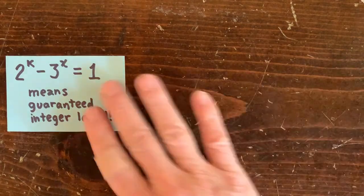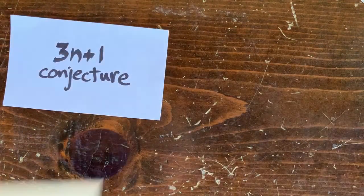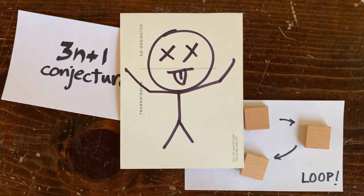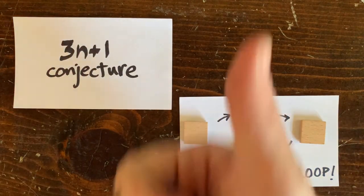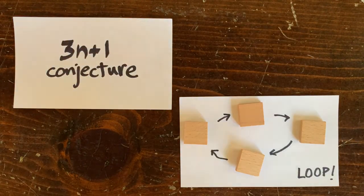We are going to keep searching for a 3 n plus 1 loop, though, or die trying. Or make an airtight proof that no loops exist. Any of those would be good outcomes, except for the dying one. Okay, see you next time.